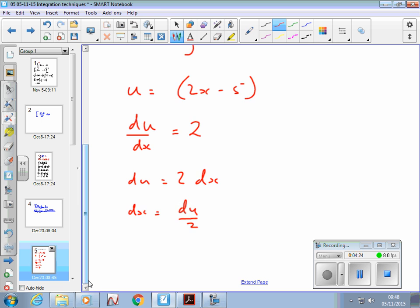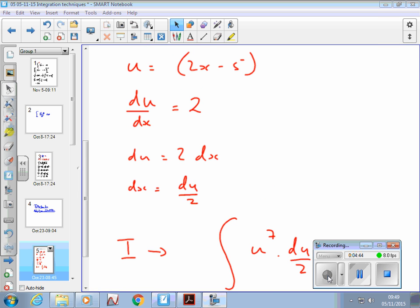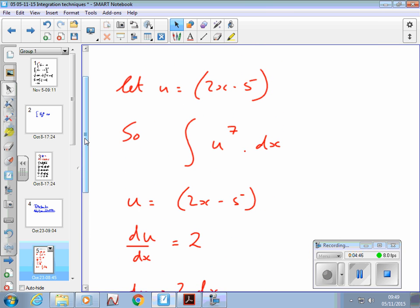So therefore the integral becomes the integral of u to the 7 times du over 2. So let's just recap that because this is basically how this always works.